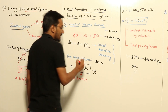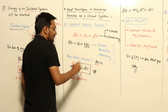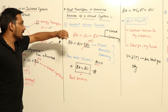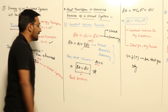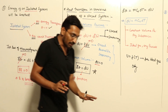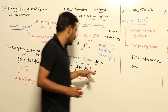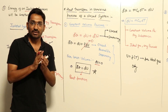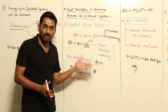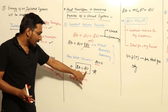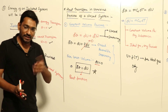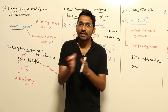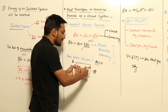If the volume is constant, then the change of volume will be zero. If the change of volume is zero, PDV will be zero. So for a constant volume process, the heat transfer will be equal to the change of internal energy — DQ will be equal to DU. This holds when the system is closed, the process is reversible, and the system is stationary. For a closed system in a constant volume process, heat transfer will be equal to change of internal energy.